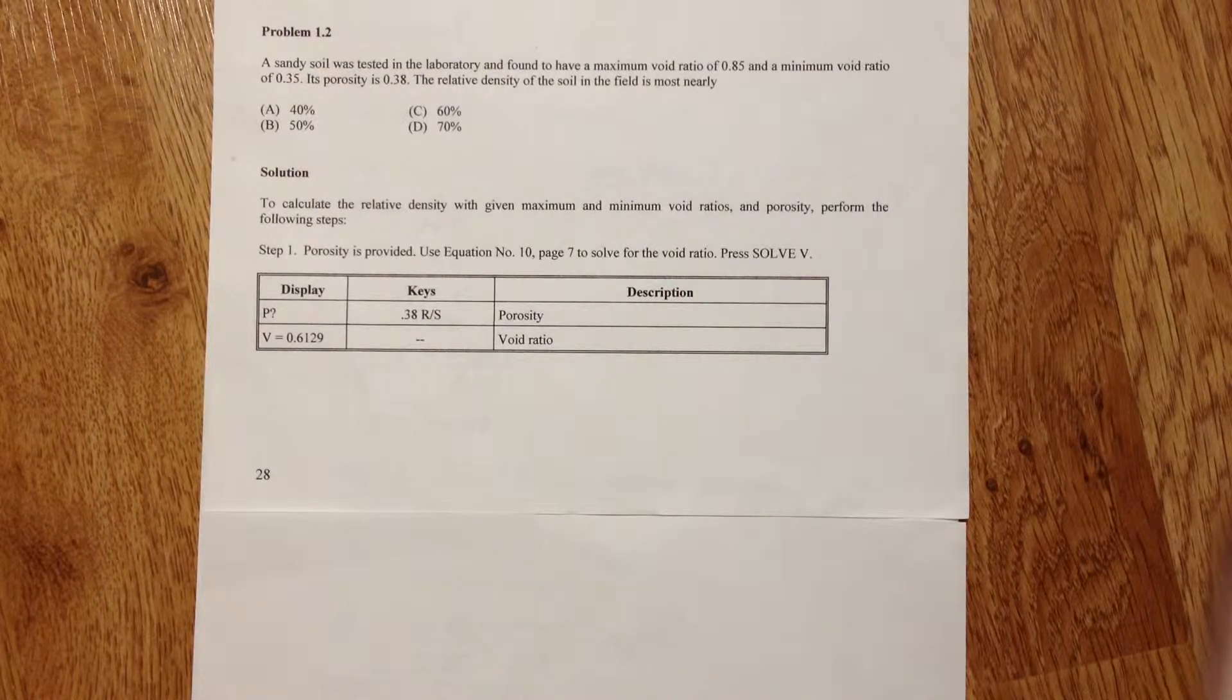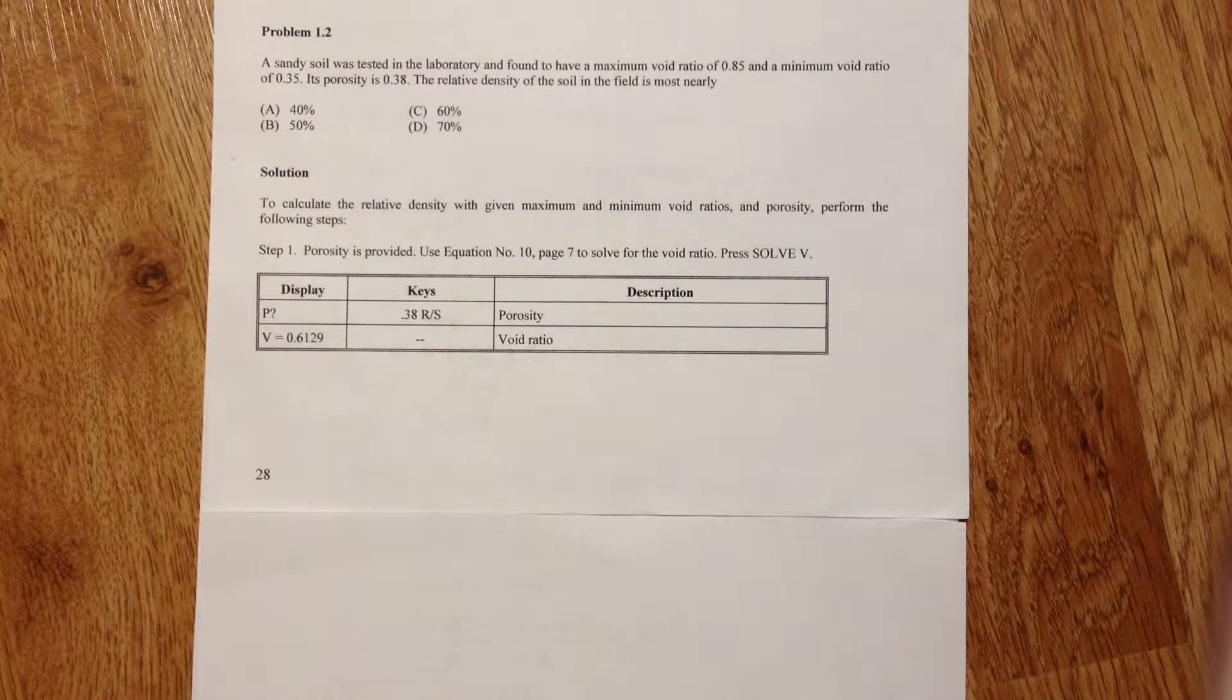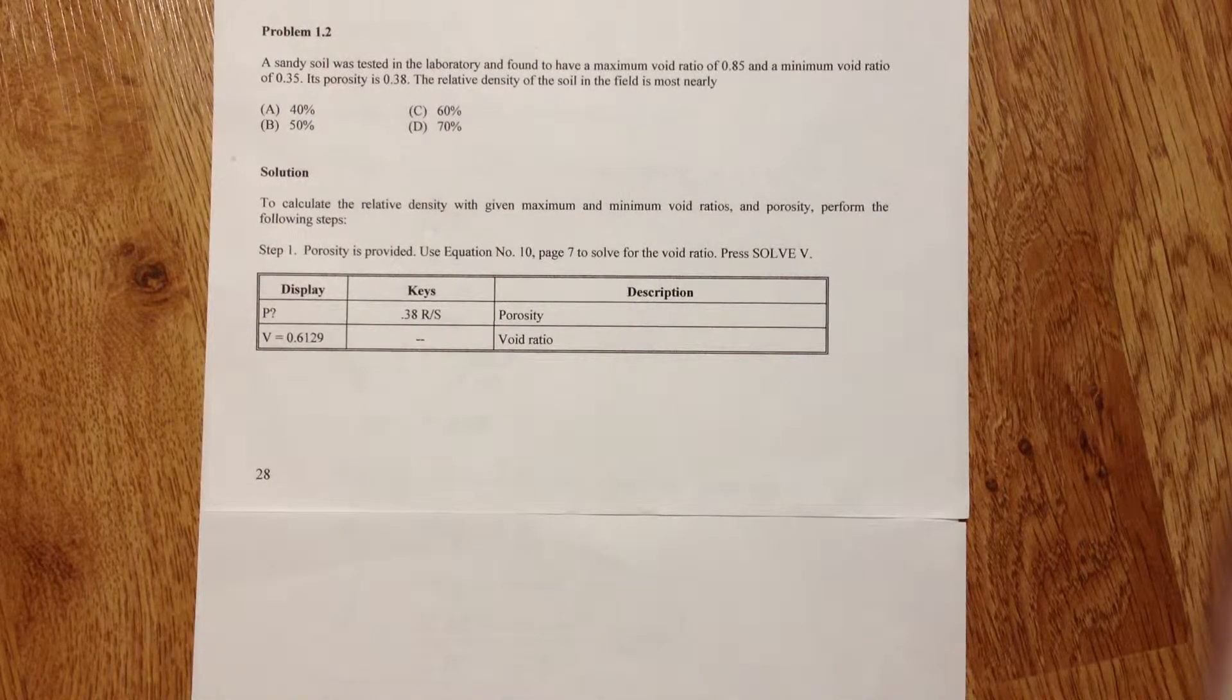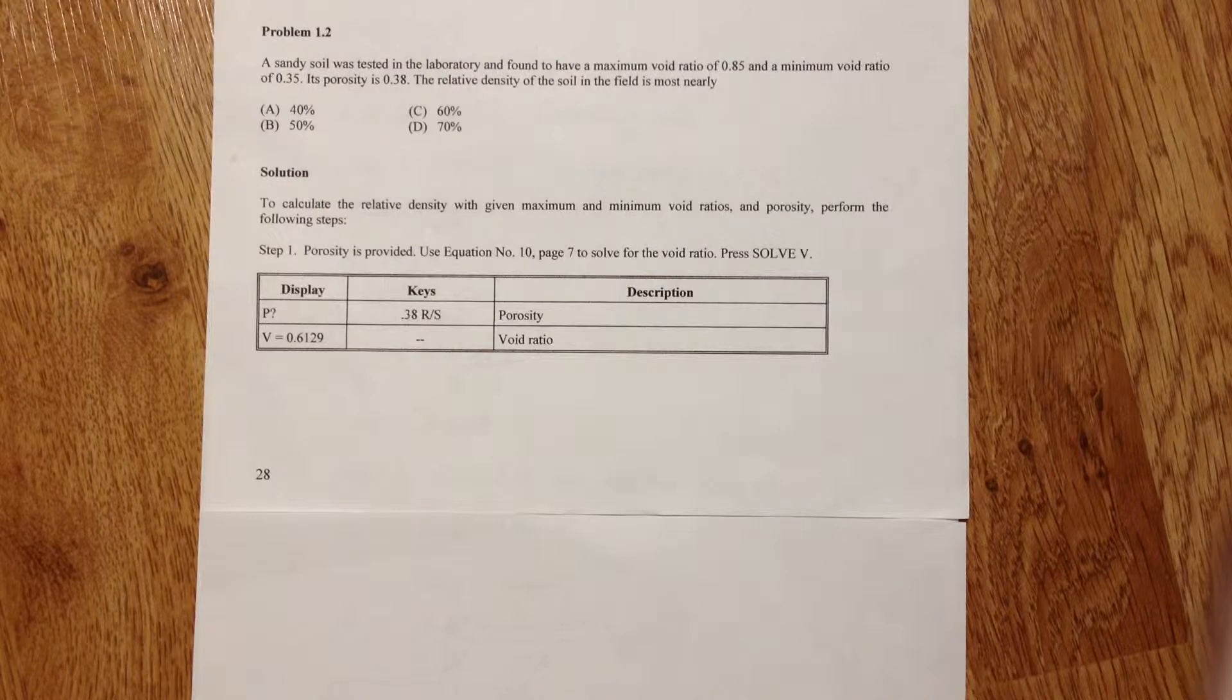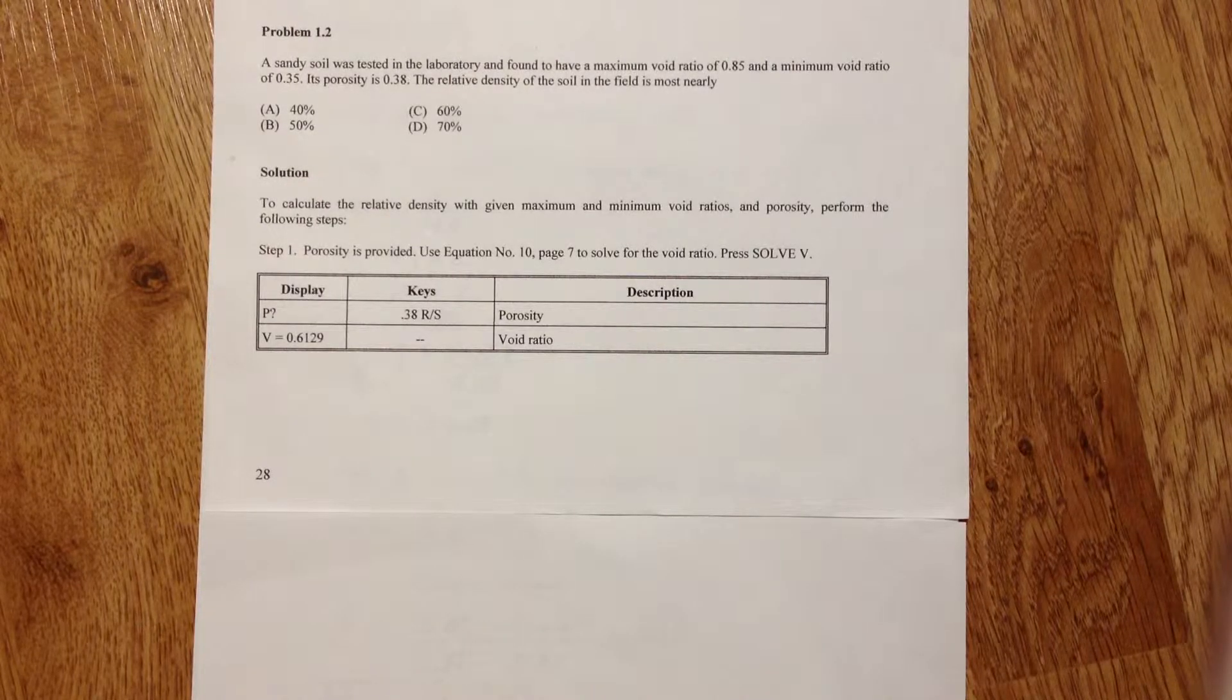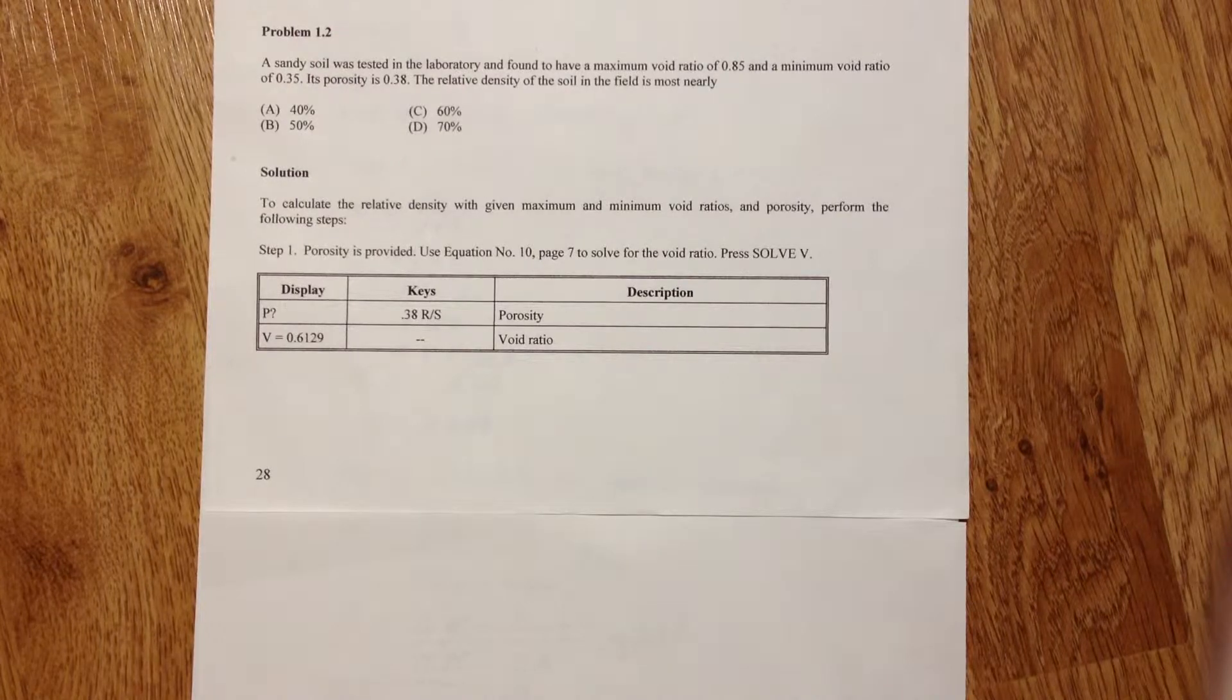Its porosity is 0.38. The relative density of the soil in the field is most nearly. Well, obviously it's a relative density calculation involving maximum and minimum void ratios and void ratio.